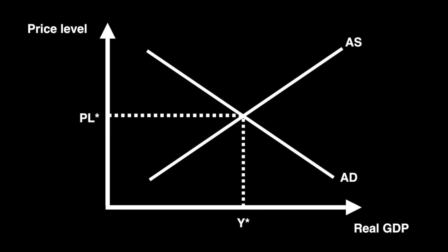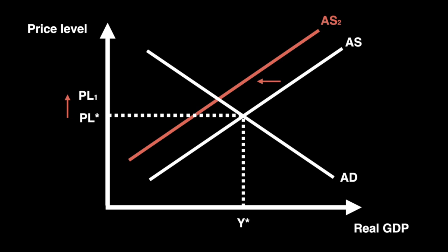Here we can see the effect of an increase in production costs on the short-run equilibrium of an economy. The aggregate supply curve shifts left to AS2, and this increases the price level from PL star to PL1 and decreases real GDP from Y star to Y1.